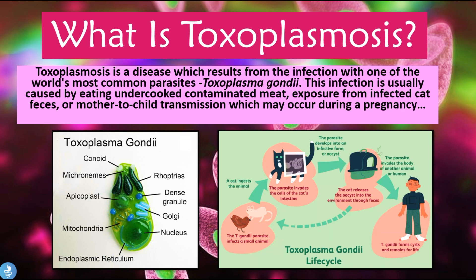If we take a closer look at this picture, it shows the Toxoplasma gondii life cycle. The T. gondii parasite infects a small animal — examples include rats, mice, birds, etc. Cats then ingest these animals, and the parasites start to invade the cat's intestines. The parasite then develops into an infective form called an oocyte, which is an egg-like form, and the parasite can then invade the body of another animal or a human.